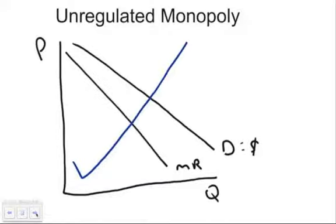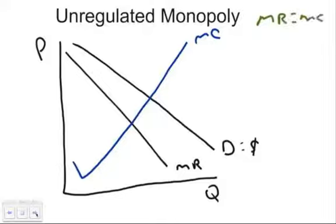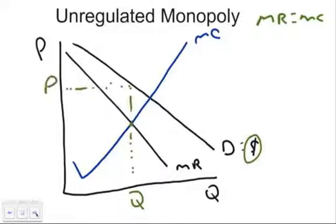Now we put in our marginal cost curve — we can still draw the lovely check mark shape. In a monopoly, we still follow the same rule for output, and it will help you on the test because it seems like every other question asks about it: it's where MR equals MC. Find that point on the graph, draw a line down — there's the quantity. Remember that demand is also the price, so we go up to the demand curve to find the price.